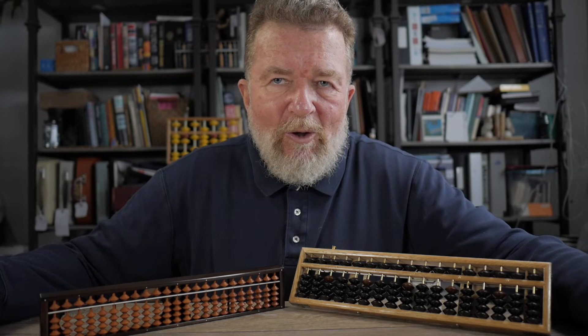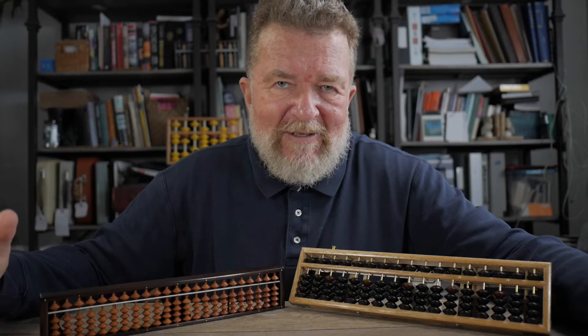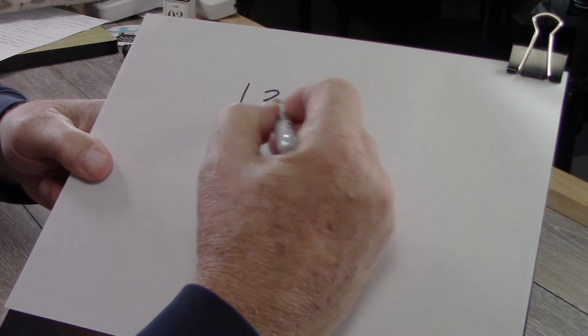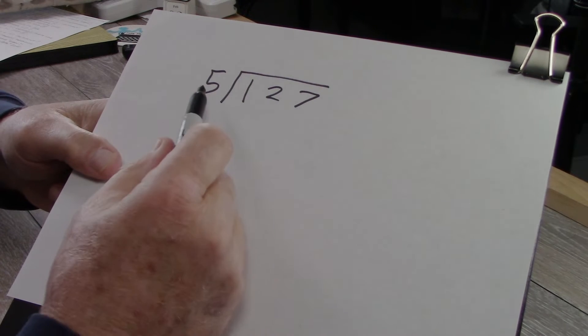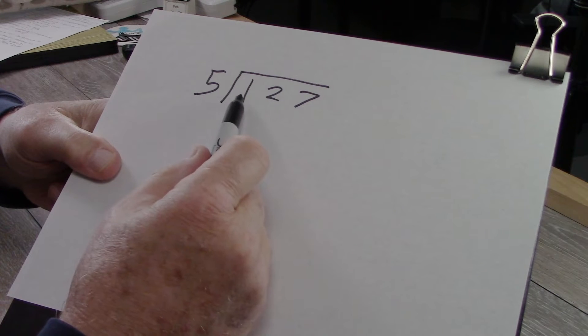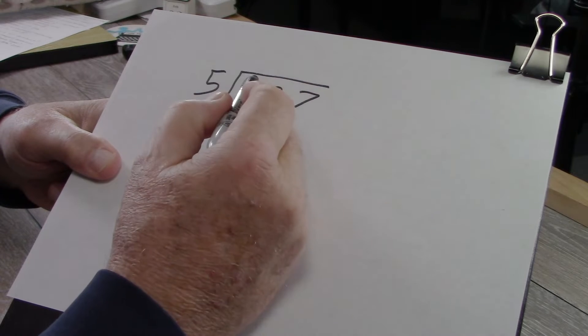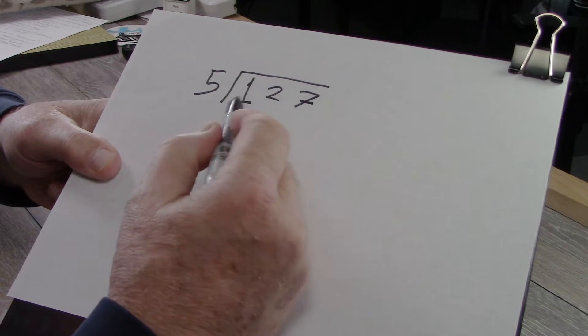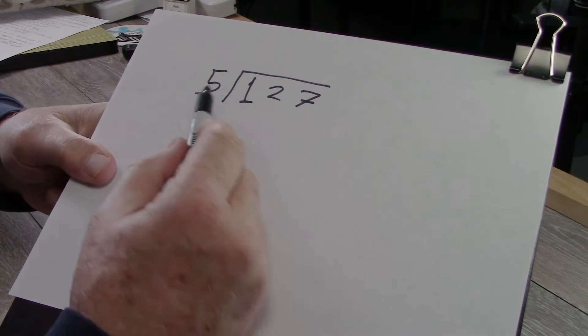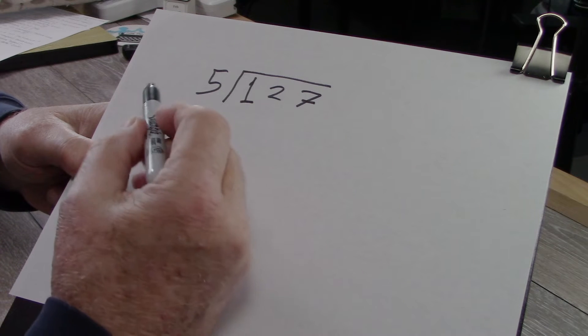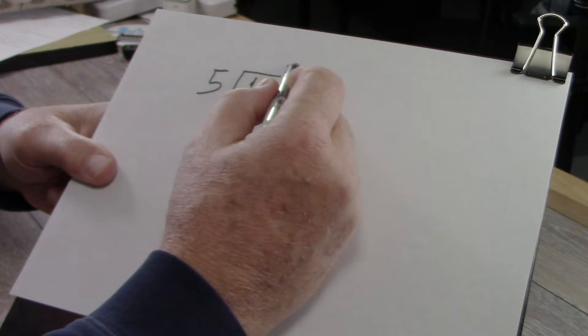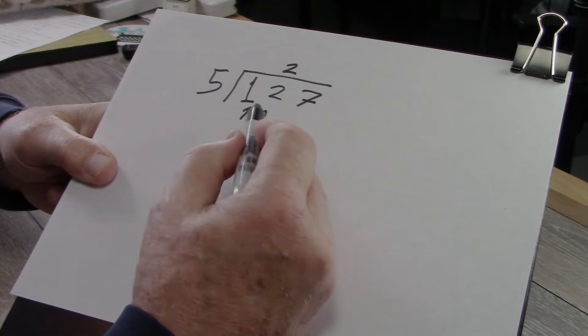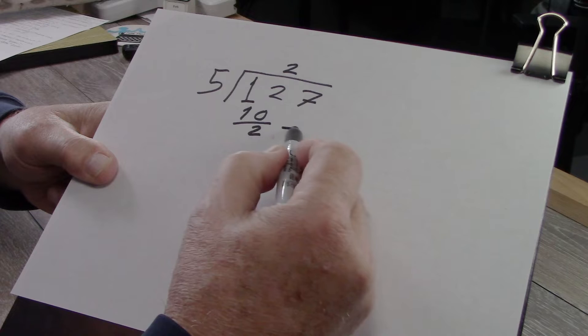The way we did it in the old days on paper was like this. Let's say we had 127 divided by 5. So what you have to do is figure out how many times the divisor goes into the first digit, which it doesn't. It's smaller than the first digit. So we go to this first two digits. And I'm going to do a little guess in my head that if I know my multiplication tables, I'll know that 5 times 2 is 10. So I'm going to put 2 up here. I write that. I do the subtraction. I carry down the 7.